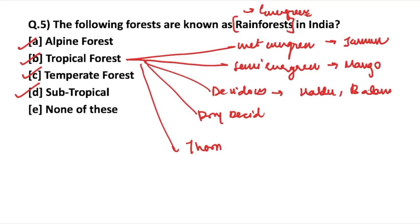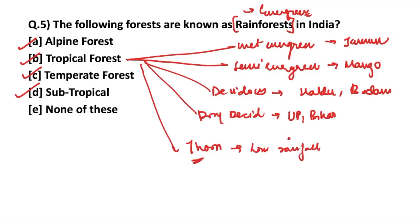Dry deciduous forests are found in UP and Bihar. Thorn forests — acacia is the most famous species — occur in low rainfall areas, and due to the scarcity of water they are categorized as thorn forests. This is how we classify tropical forests.